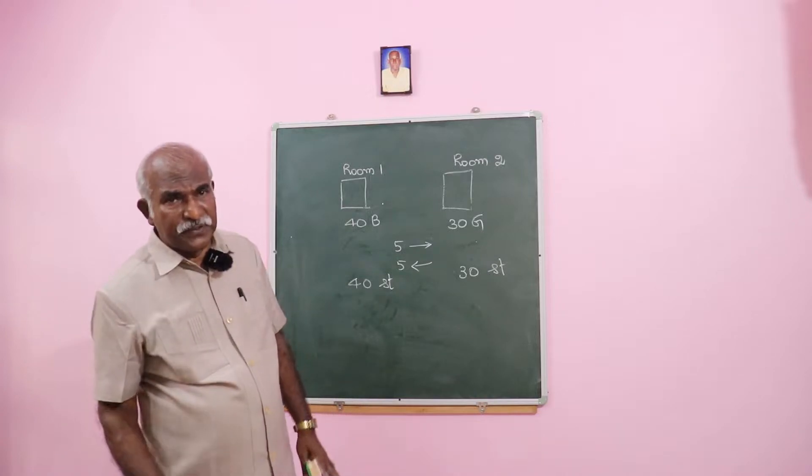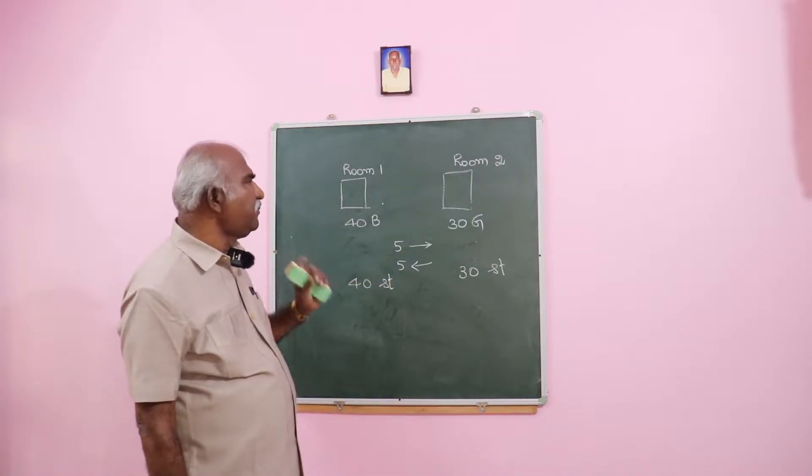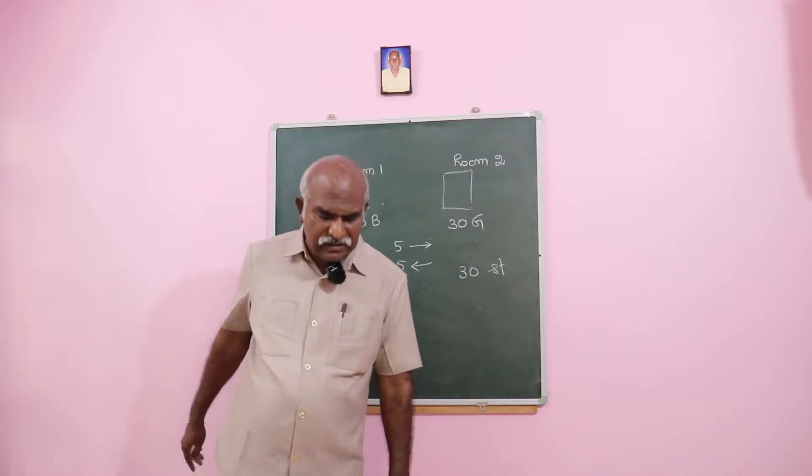Now let me explain the replacement principle. There are two rooms. In room one there are 40 boys, and in room two there are 30 girls.